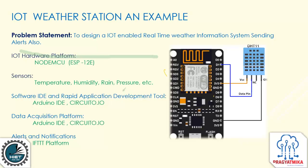This is the problem statement: I want to design an IoT-enabled real-time weather information system — what temperature is there in my room right now, what is the humidity level in my room, what is the rain value, what is the pressure value — all these things I want to gather. And I want to send alerts also using this platform.